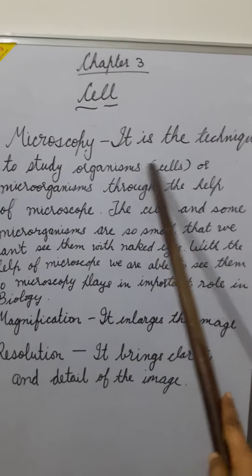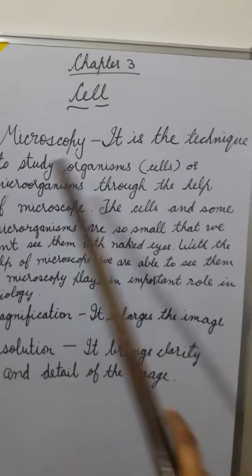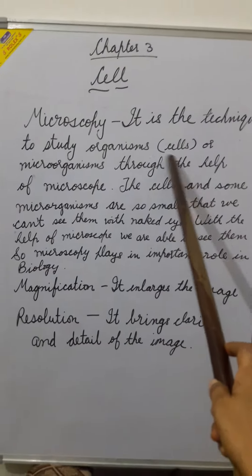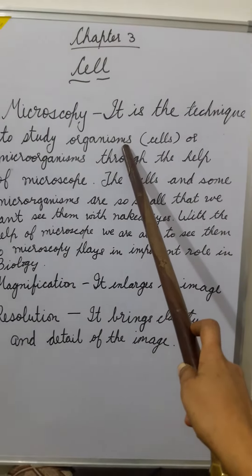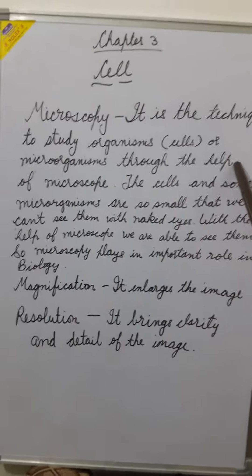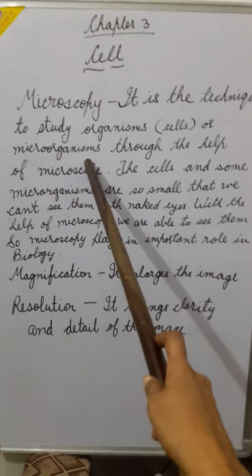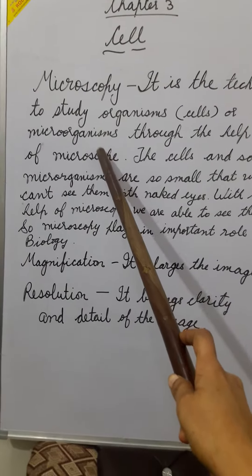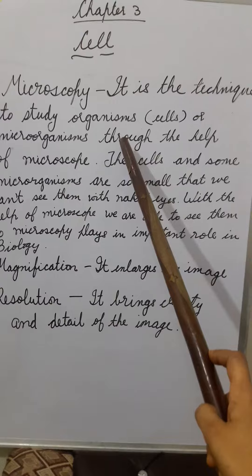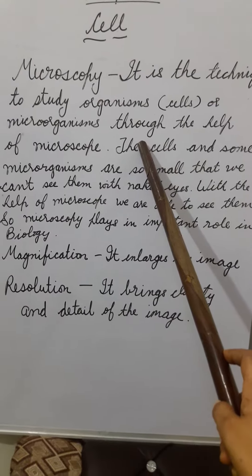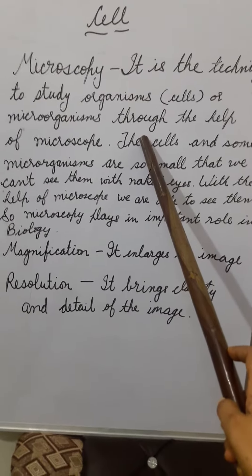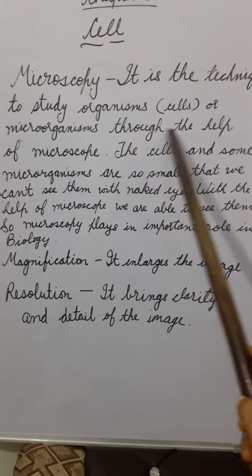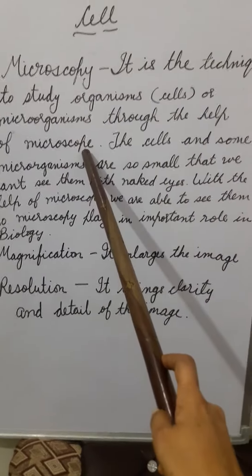Microscopy is the technique to study organisms — the cells of organisms which are very small in size, or the microorganisms. The organisms which are very small in size cannot be seen by the naked eyes, so we see them through the help of a microscope.